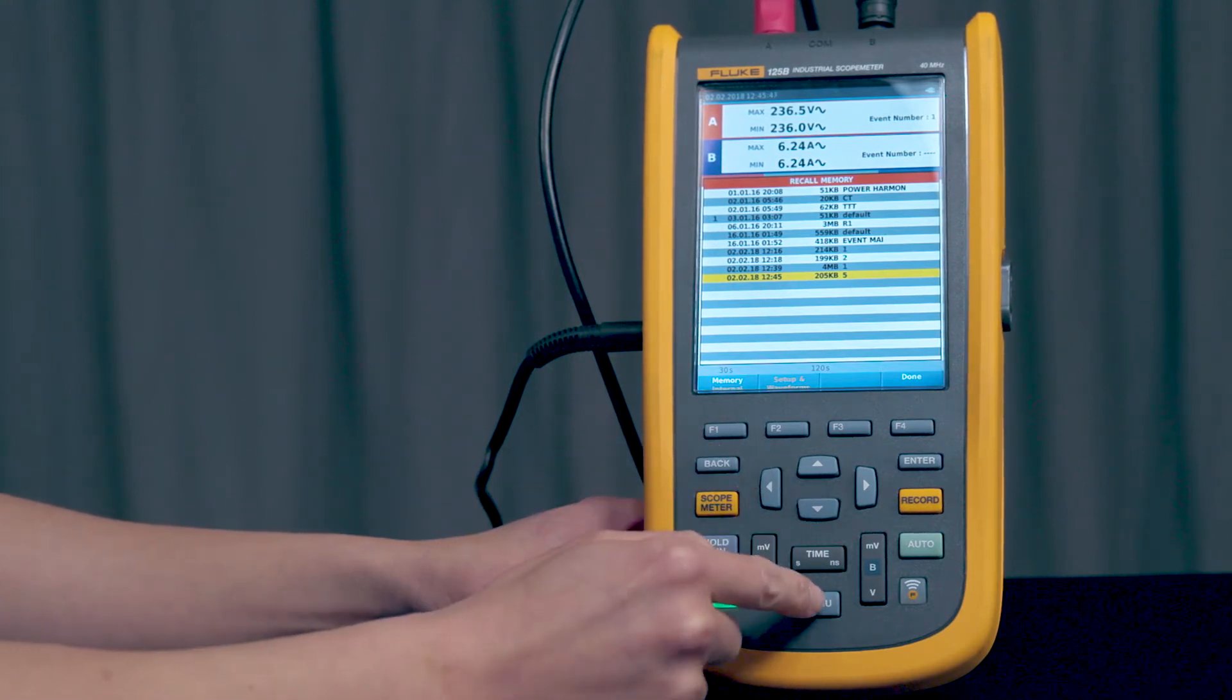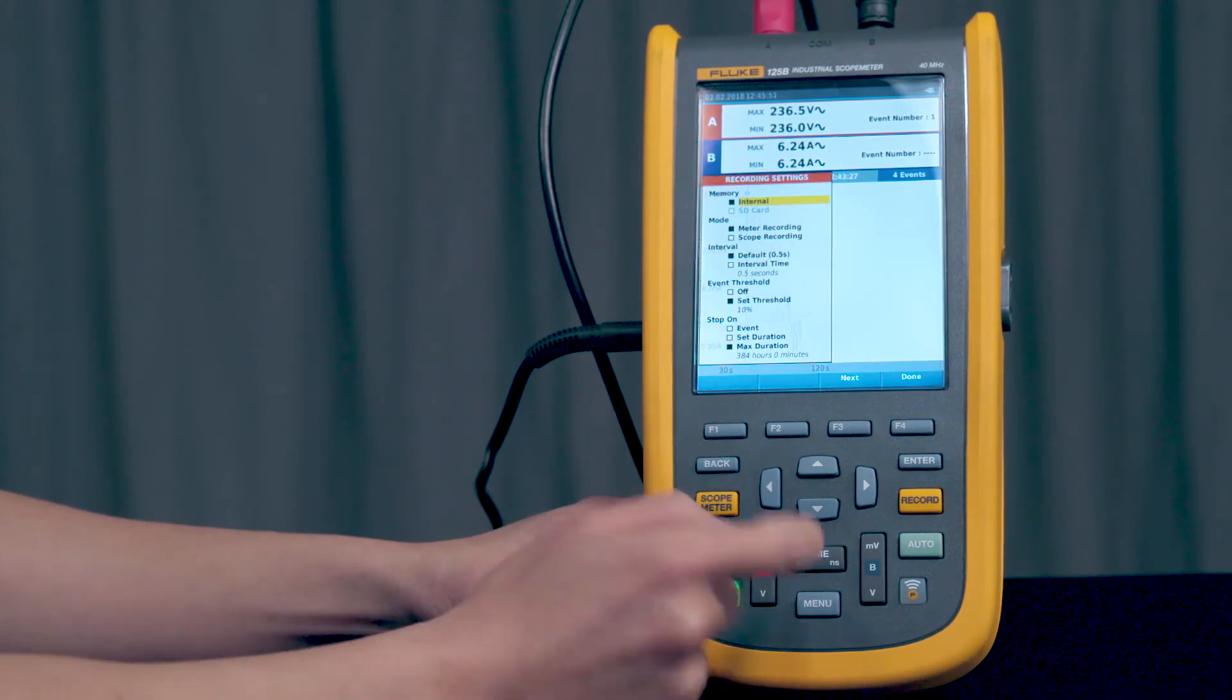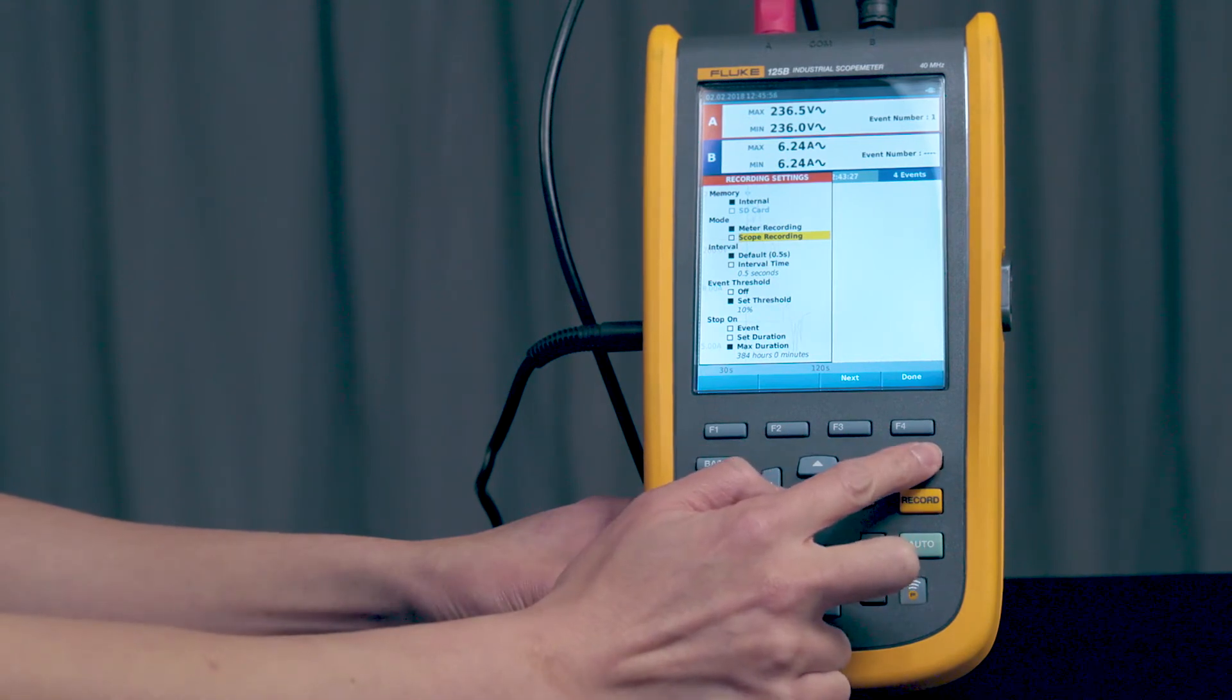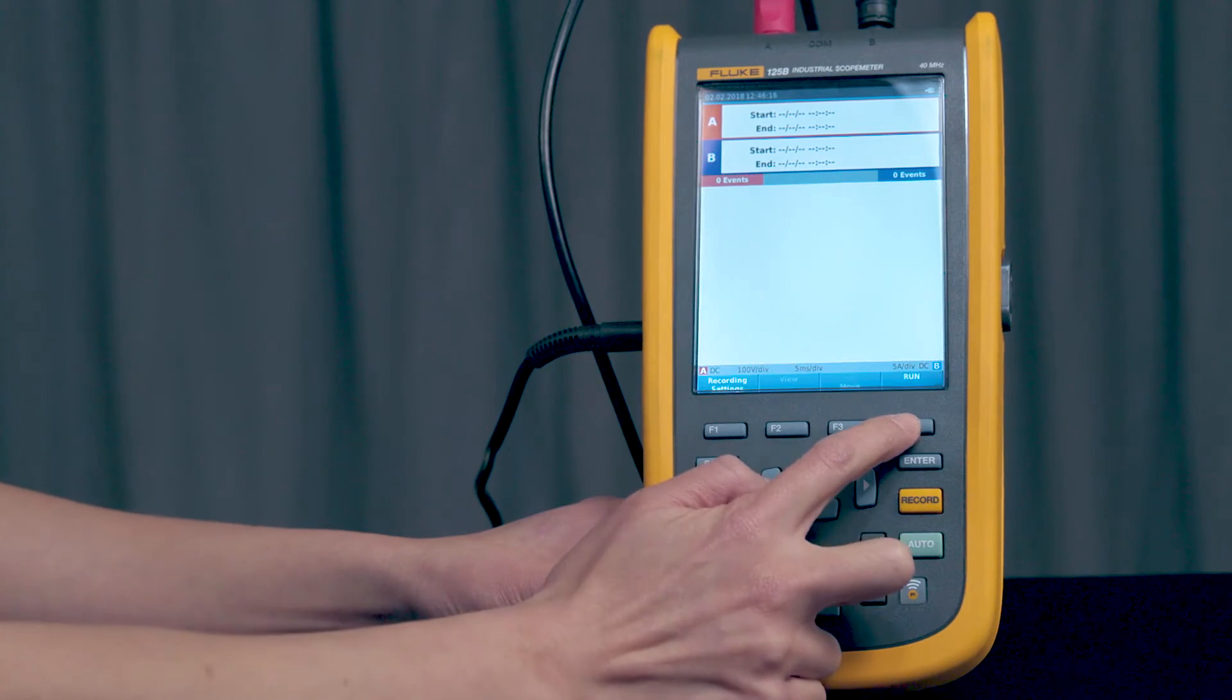Now let's go back to the recorder setting. This time let's do a scope recording. We'll press Enter here. We'll press Done and Run.